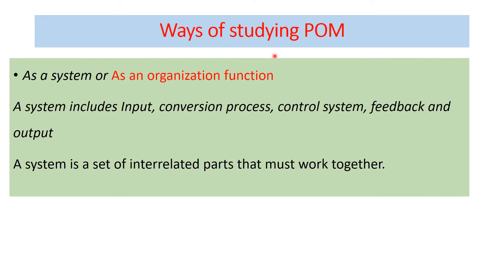Ways of studying production operation management: it can be studied as a system, as an organizational function, or as a set of decisions. We can study production operation management as a system — which includes input, conversion process, control systems, feedback, and outputs — or as an organizational function, because operation management is one of the organizational functions.